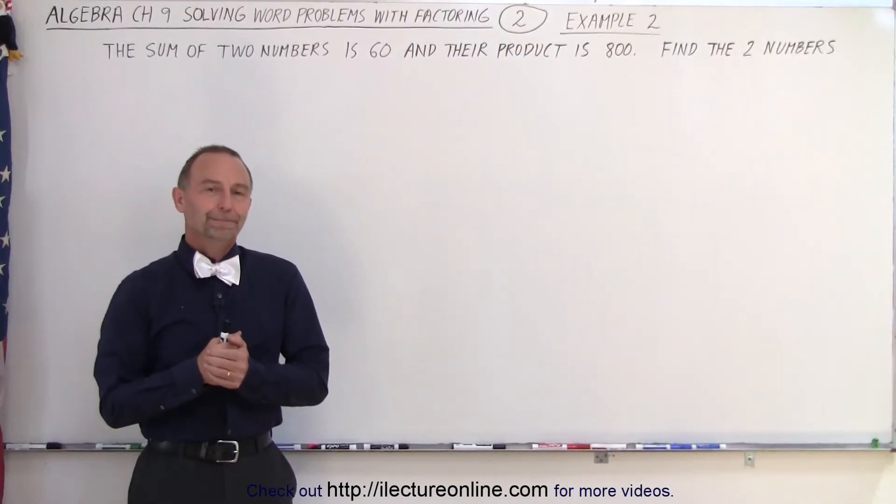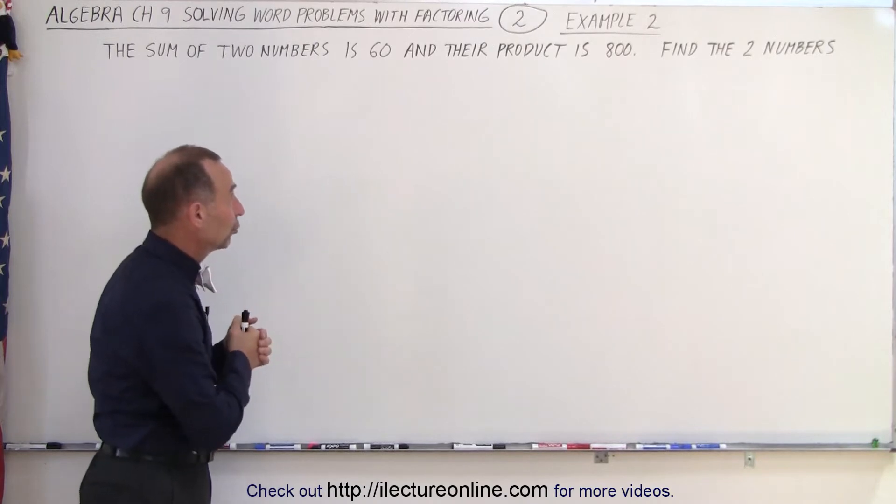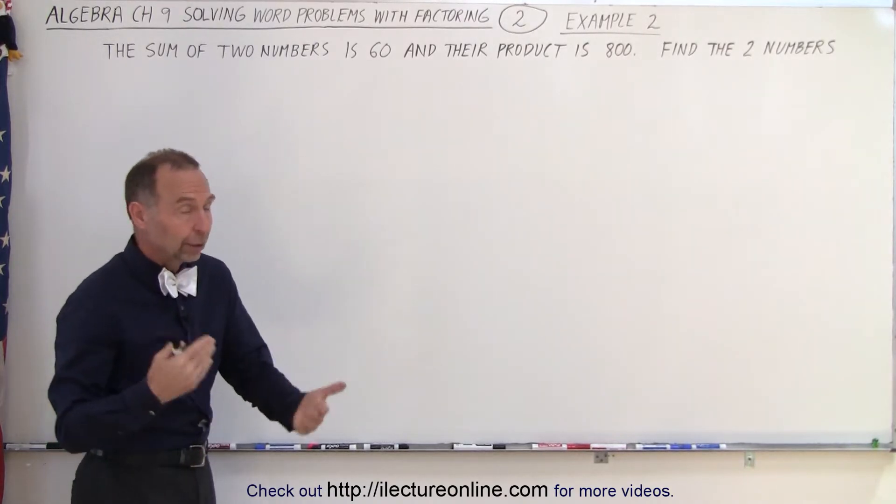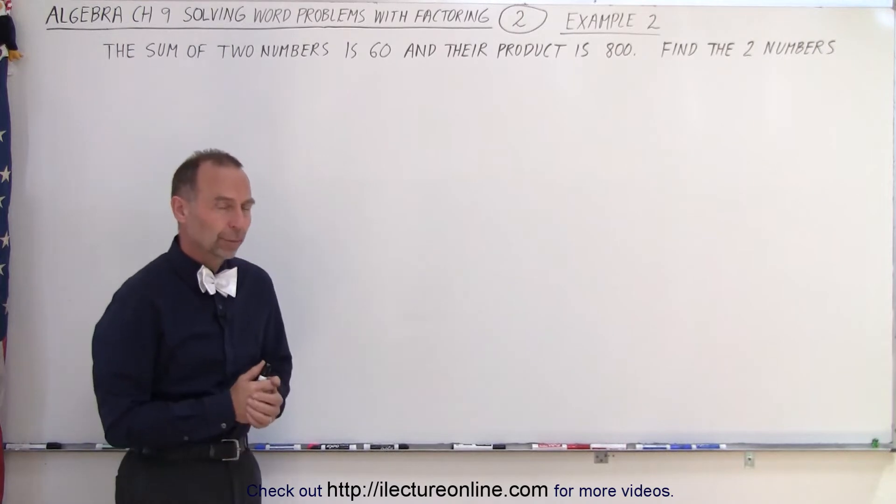Welcome to iLectronLine. Here's our next example of how to apply factoring to word problems that include quadratic equations. The sum of two numbers is 60 and their product is 800. Find the two numbers.